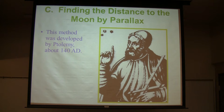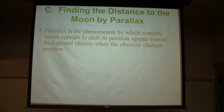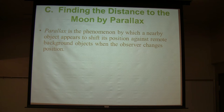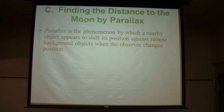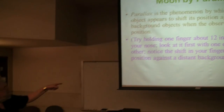Ptolemy measured the distance to the Moon by parallax. Parallax is the change in apparent position of an object depending on your position or perspective. If you hold your finger close to your nose and alternate looking with one eye and then the other, you'll see your finger jump back and forth. If you move your finger to arm's length and do the same thing, it seems to move less because it's farther away — the farther away something is, the less parallax effect for the same motion.